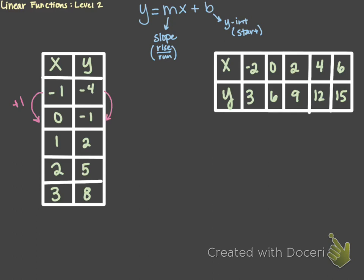On the y side, to get from negative 4 to negative 1, we are going to add 3. Our slope is our rise over run, which is also known as the change in the y values over the change in the x values. Our change in the y value here was positive 3, and our change in x is going to be 1, so we have 3 divided by 1, which is 3. So our slope, or our m value, is going to equal 3.